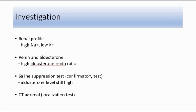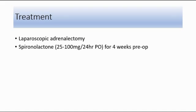For treatment of Conn's syndrome, the main treatment is laparoscopic adrenalectomy, where the adrenal gland is removed. Spironolactone is also given to control blood pressure and potassium level for four weeks before the operation. That's all for my brief discussion on Conn's syndrome. Thank you.